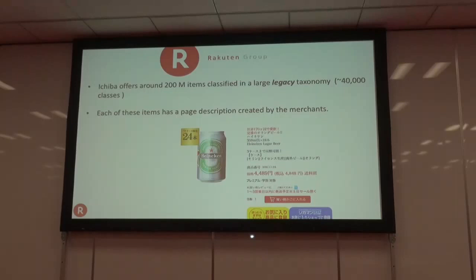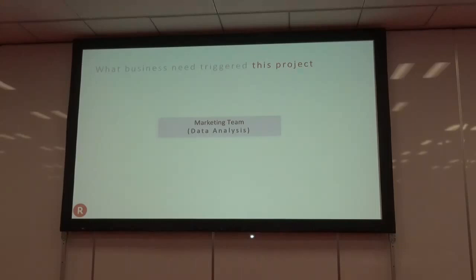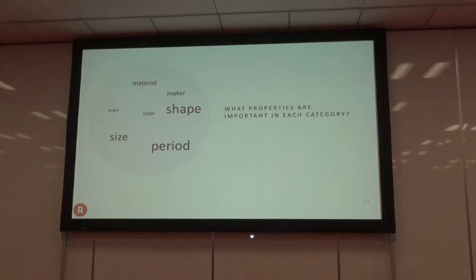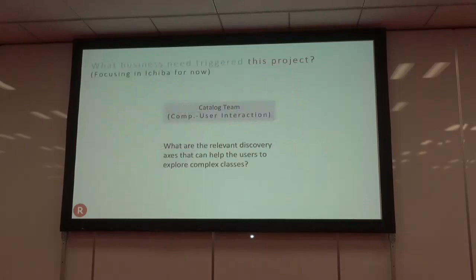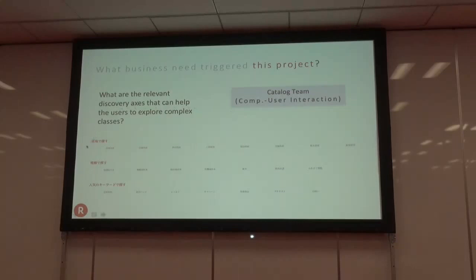Why does Rakuten need semantic information? There are at least two departments that need it: the marketing team and the catalog team. The marketing team, given a category like furniture, wants to know which properties are important — such as shape or size — which values exist for each property, which values are associated with the most GMV, or which ones are trending. The catalog team is in charge of making users' lives easier, helping users find what they need by providing relevant discovery access.